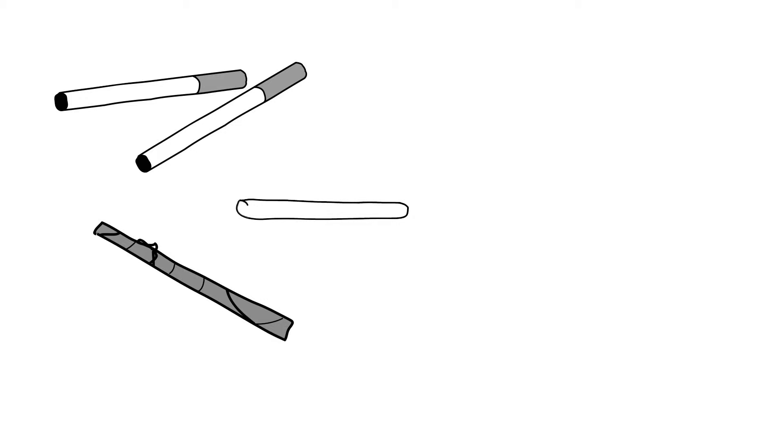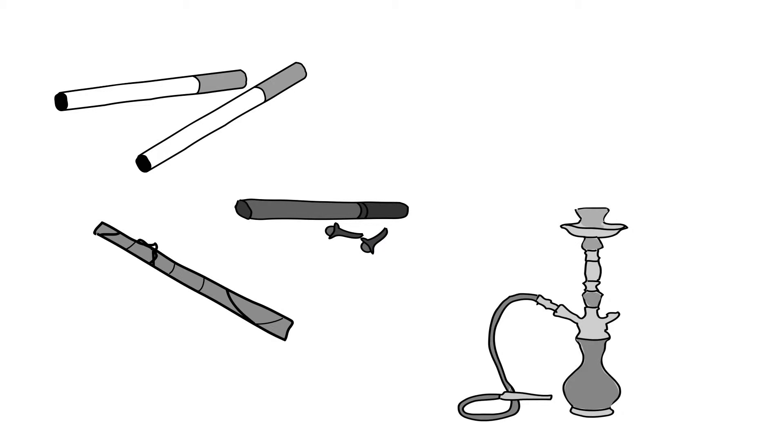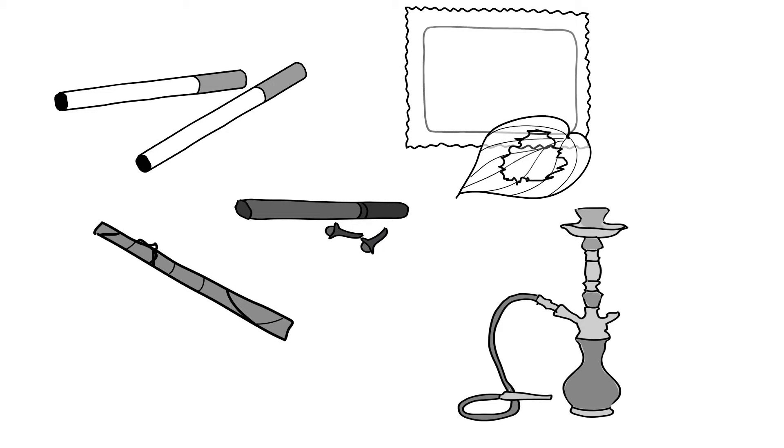Kreteks, which are clove-flavored cigarettes popular in Indonesia, and water pipe, also known as hookah, shisha, hubble-bubble, and nargile. Its use is most prevalent in North Africa, the Mediterranean, and parts of Asia, but it is also increasing in popularity in other parts of the world.